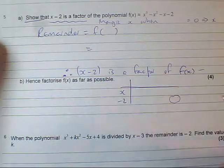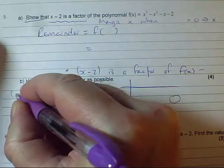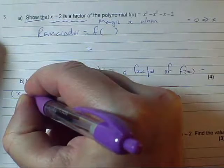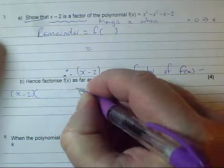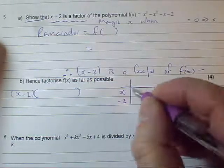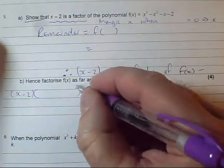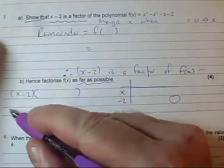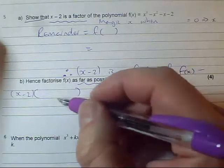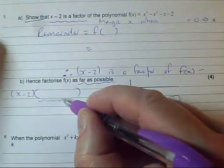At that stage, you'll have set up the grid. You've got x minus two times something. You now know what that something is - this will be the thing across the top. To factorize it as far as possible, you've got to consider whether this can be factorized.